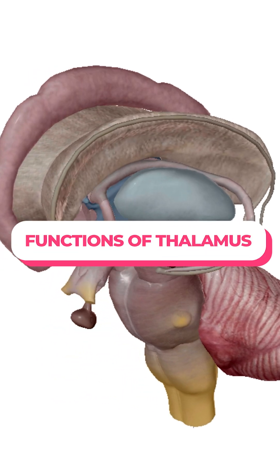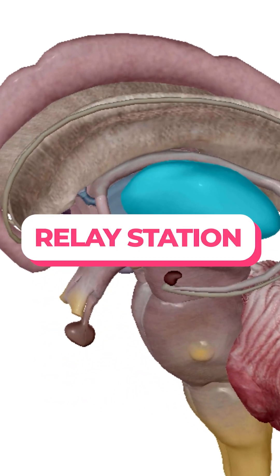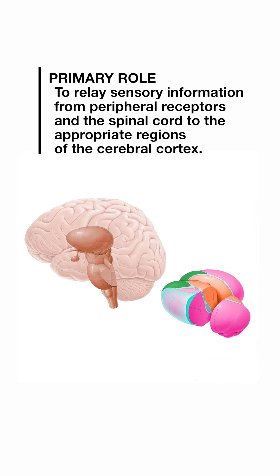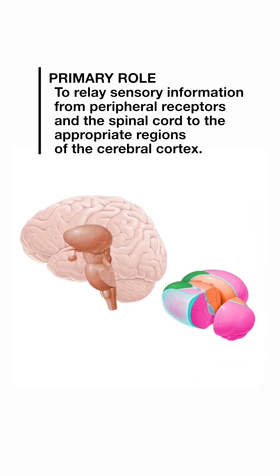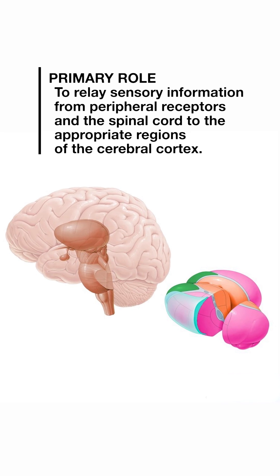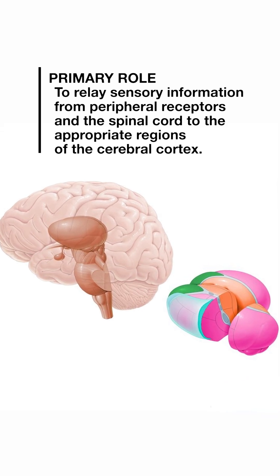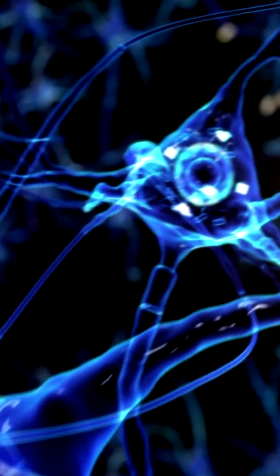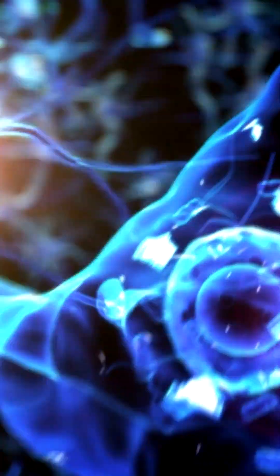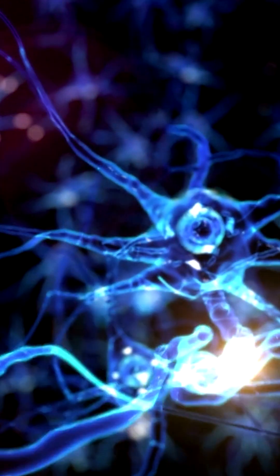The thalamus performs various functions. One of its primary roles is as a relay station, relaying sensory information from peripheral receptors and the spinal cord to the appropriate regions of the cerebral cortex. It processes and transmits inputs from all the senses except smell to associated cortical areas.